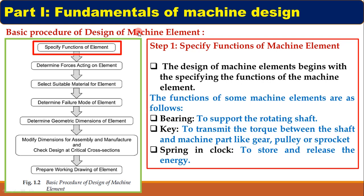For example, suppose a gearbox consists of 6 parts. From scratch to the final drawing, to design that gearbox we follow the procedure of machine design. But if we want to design one part from that gearbox — let's say the shaft — then we follow the procedure of design of machine element. This means design of machine element is one sub-step within the overall machine design procedure.